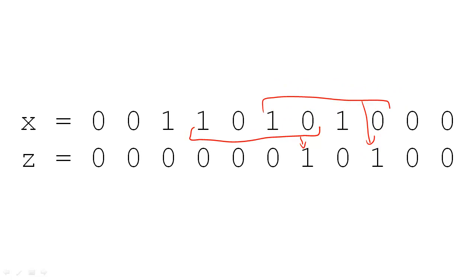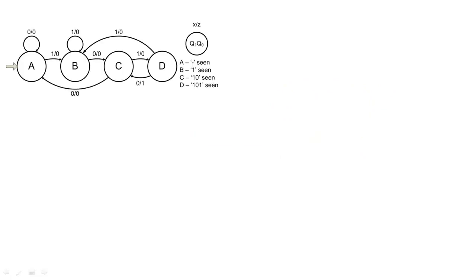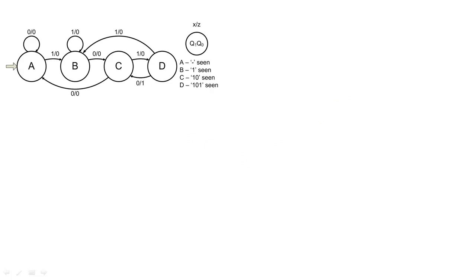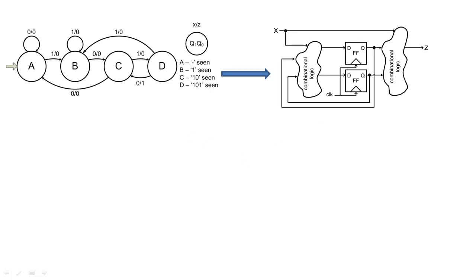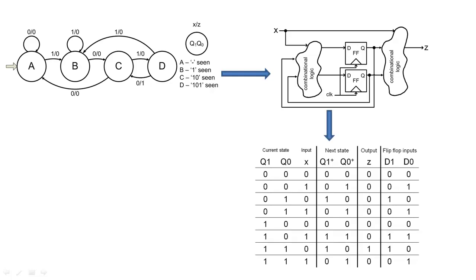To create this circuit, we will first create a state diagram. Then, we will determine the general structure of our circuit, create a specialized truth table called the next state table, and finally, we will use the next state table to create our circuit.